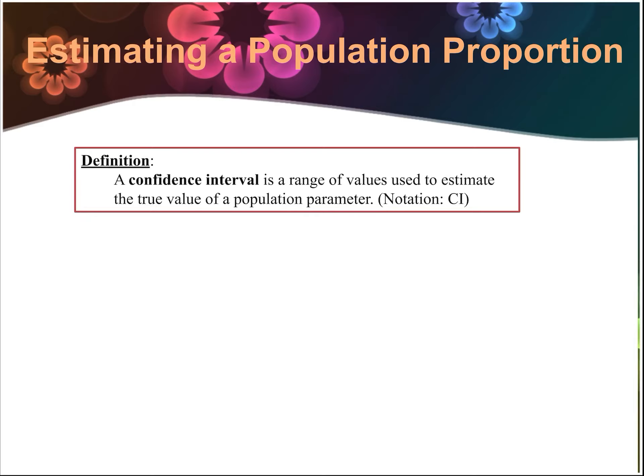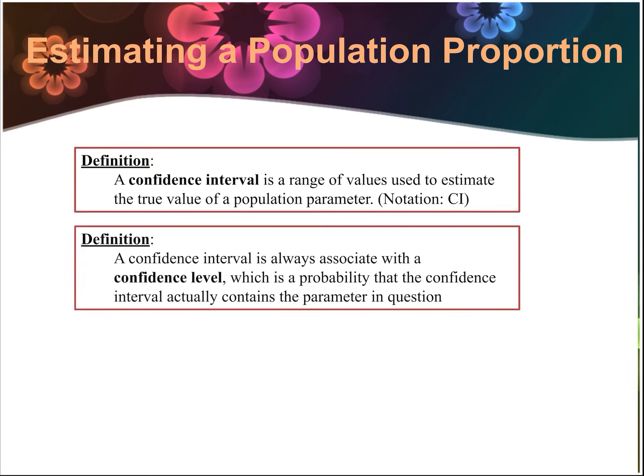We're going to be talking a lot about what we call confidence intervals. A confidence interval is a range of values that's used to estimate the true value of a population parameter. We'll use the notation CI for short. A confidence interval is always associated with a confidence level, which is a probability that the confidence interval actually contains the parameter in question.